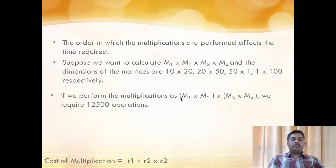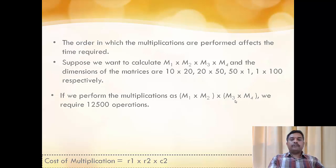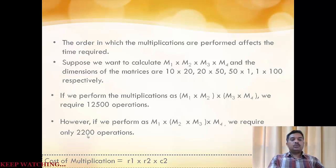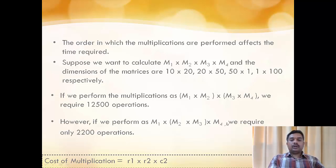If we perform the multiplication as (M1×M2)×M3 then multiplied by M4, we need 12,500 operations. Similarly, if we multiply M1 to the product of (M2×M3) and then multiply M4, the number of operations required will be 2,200, which is quite less.